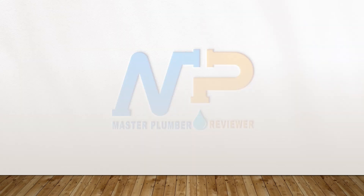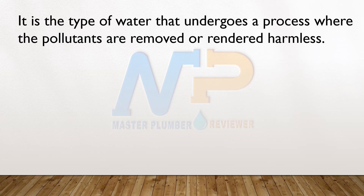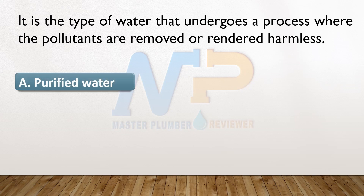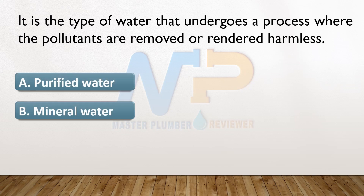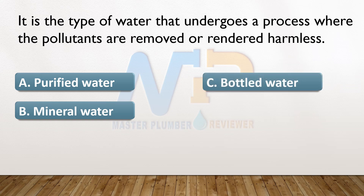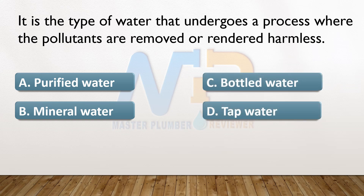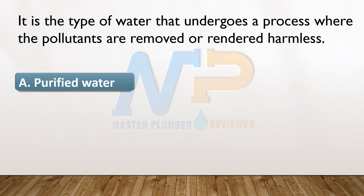It is the type of water that undergoes a process where the pollutants are removed or rendered harmless. A. Purified water. B. Mineral water. C. Bottled water. D. Tap water. The answer: A. Purified water.